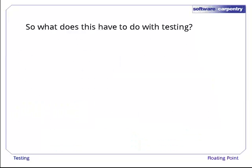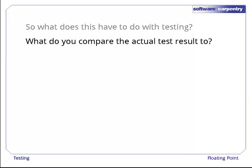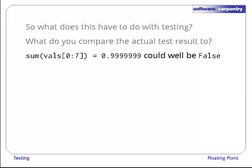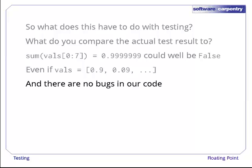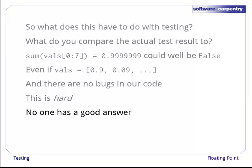So what does this have to do with testing? Well, if the function you're testing uses floating point numbers, what do you compare its result to? If we compared the sum of the first few numbers in values to what it's supposed to be, the answer could be false, even if we're initializing the list with the right values and calculating the sum correctly. This is a hard problem, a very hard problem. And no one has a good generic answer, because the root of our problem is that we're using approximations, and each approximation has to be judged on its own merit.